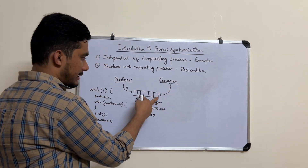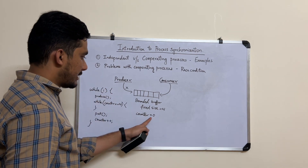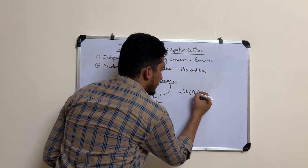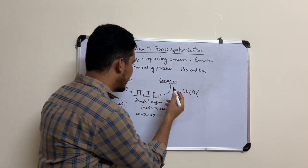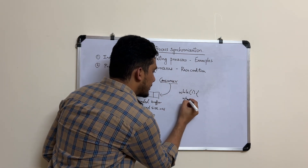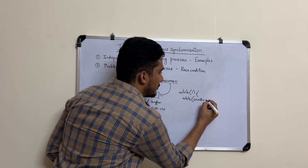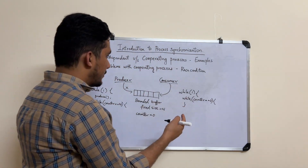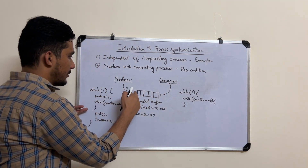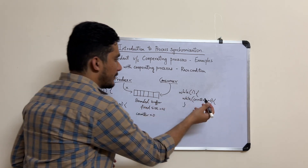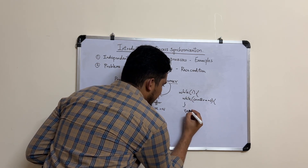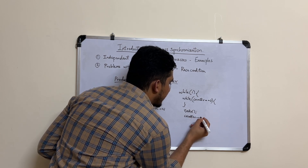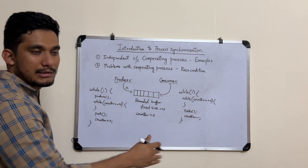The consumer process also runs continuously. If counter is zero there is nothing to consume, so it waits in the loop. Once the counter is not zero — meaning the producer has placed something — the consumer takes the item from the buffer and decrements the counter by one.